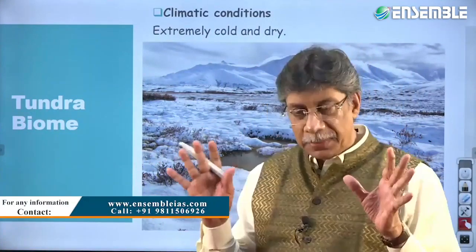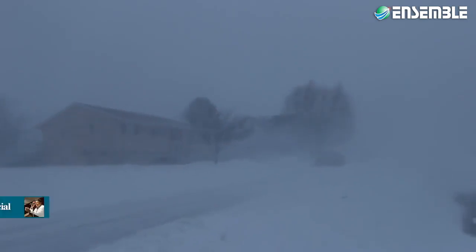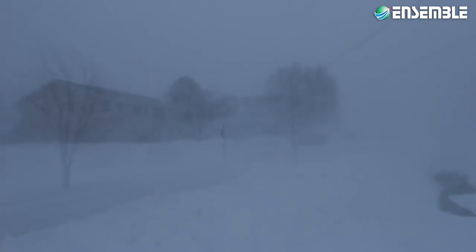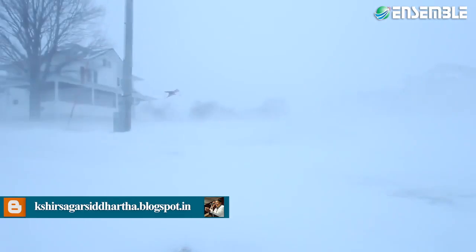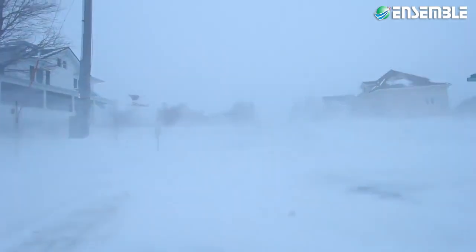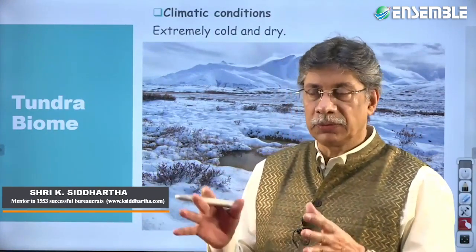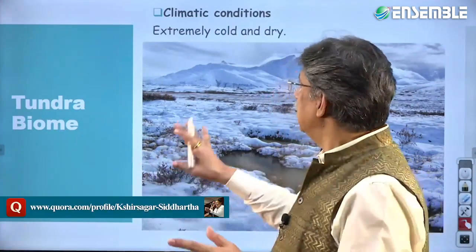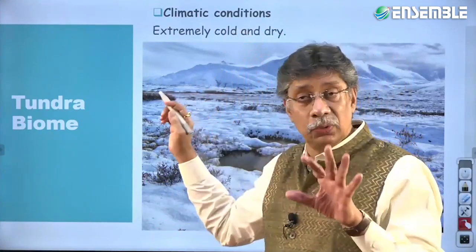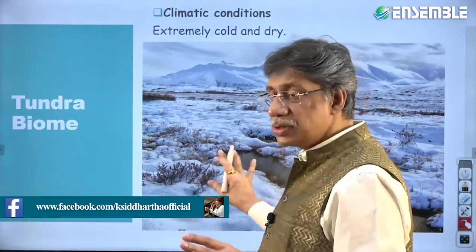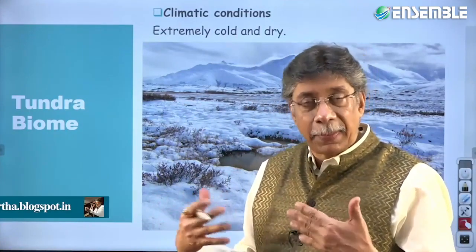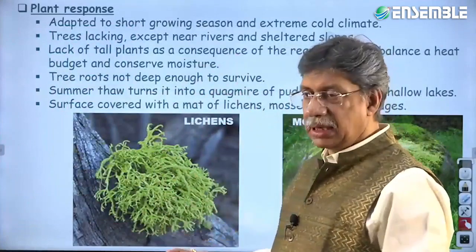In summary, the climatic conditions of the tundra region and the ice cap climate — both polar climates — are extremely cold and extremely dry. It is one of the driest regions because the air has no capacity to hold moisture. In response to these conditions, plants and animals have evolved specific adaptations for the short growing season and extreme cold.